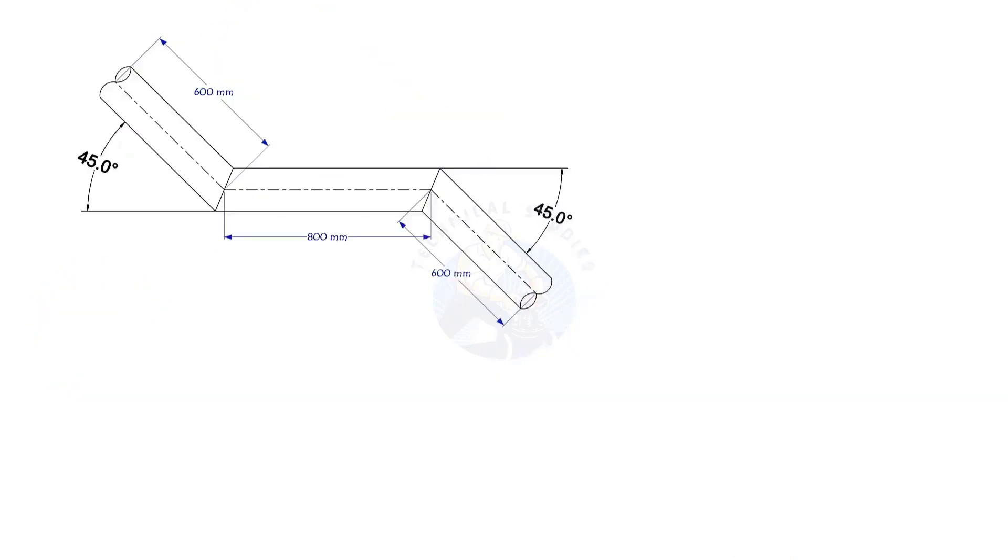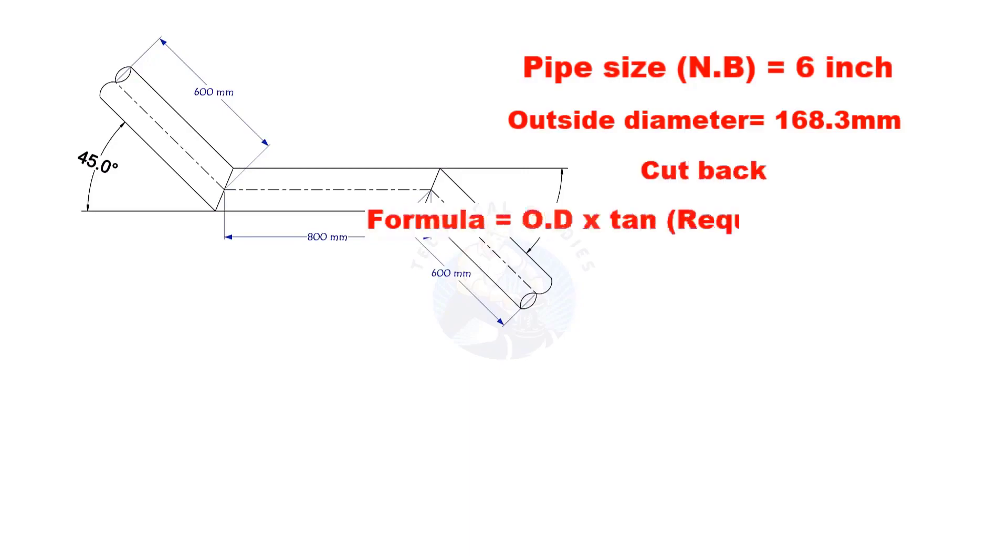This method is suitable for cutback of any degree. The outside diameter of a 6 inch pipe is 168.3 millimeters. Cutback is OD multiplied by tan half degree, divided by 2.